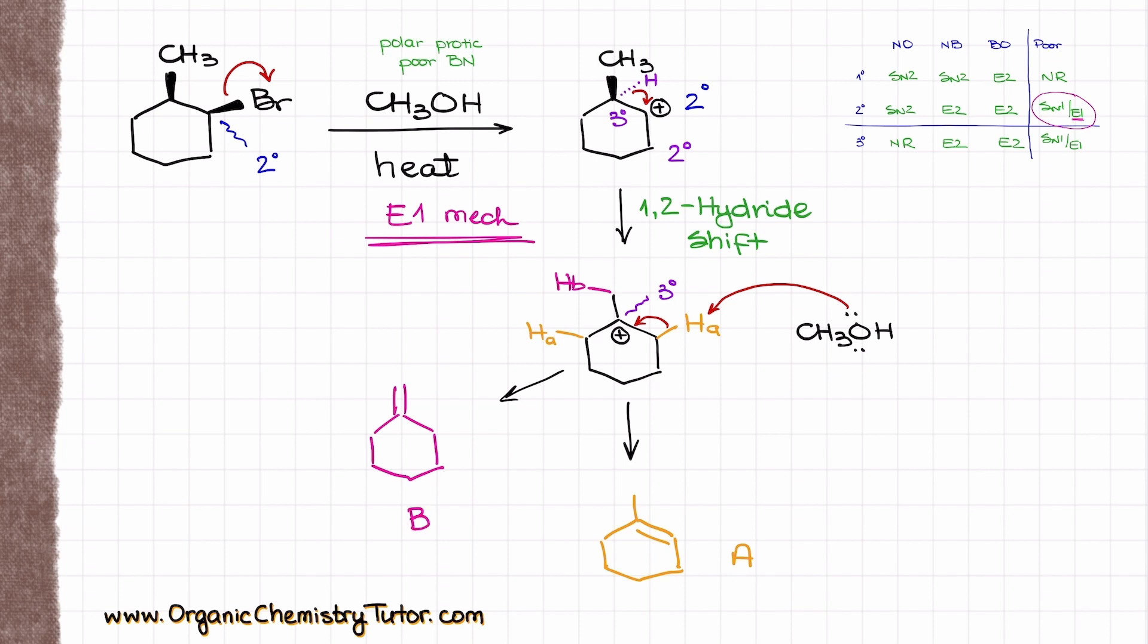Now we know that in the case of the E1 reaction, we're always going to form the more substituted double bond, which is known as Zaitsev's rule. In the E1 reaction, per Zaitsev's rule, we are going to make the more substituted double bond. If I look at my molecule A, my double bond is connected to one, two, three carbons, while in molecule B, my double bond is only connected to one, two carbons, which means that molecule A is going to be a more substituted product. We are going to call that as our Zaitsev product, and that one is going to be our major product.